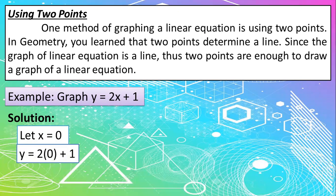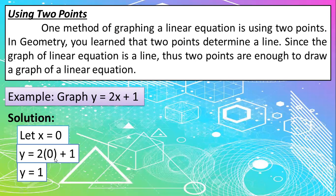So with that, in y is equal to 2x plus 1, your x will be 0. So 2 times 0 is 0 plus 1 is equal to 1. So in this case, if your x is 0, then your y is 1. So we have an ordered pair 0 and 1.